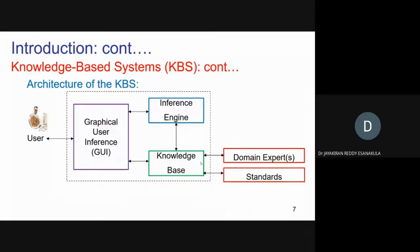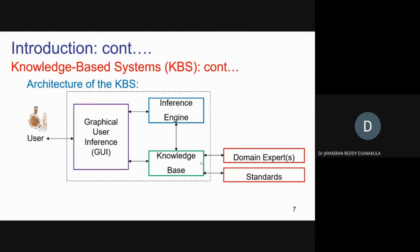The knowledge base is further linked with two sections: domain experts and standards. Domain experts are like a human — they give all knowledge to the database in the form of experiences, thumb rules, or shortcuts for solving any problem. Standards are things like ISO, AGMA, or ASTM standards. All these things are kept in the knowledge base, which is linked to the inference engine and to the GUI, which delivers the solution back to the user.